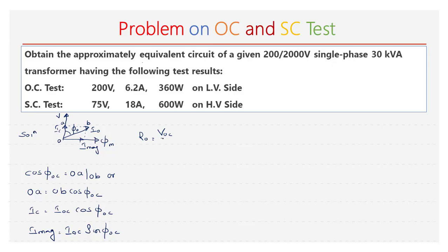We are determining the shunt parameters, that is R0 and X0, where R0 is equal to the applied voltage divided by the current flowing through it, that is VOC divided by Ic, and X0 is equal to VOC divided by Im.